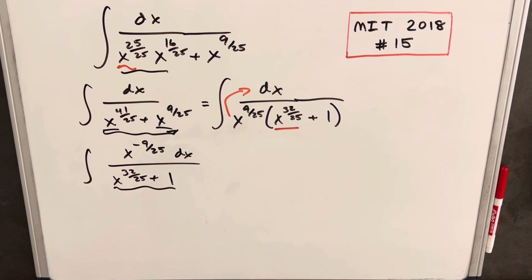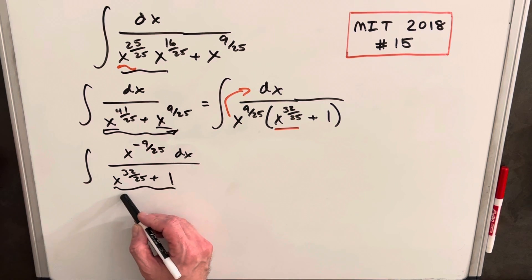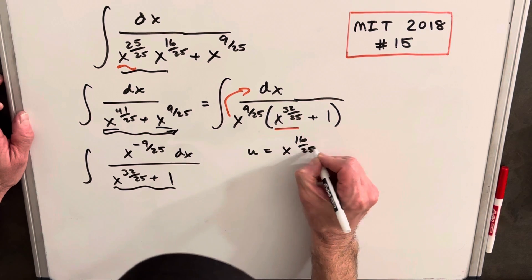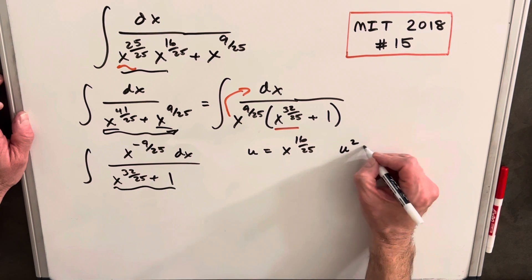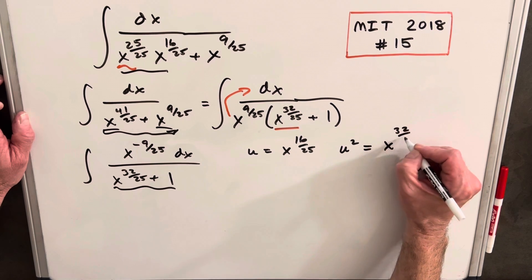Our first option usually is we'd like our whole numerator to be just u, that's the easiest thing. But we also, if this was a square term, can try u equals x to the 16 over 25, just noticing that u squared is going to be, if we square this, our 32 over 25. That would work out pretty nice.